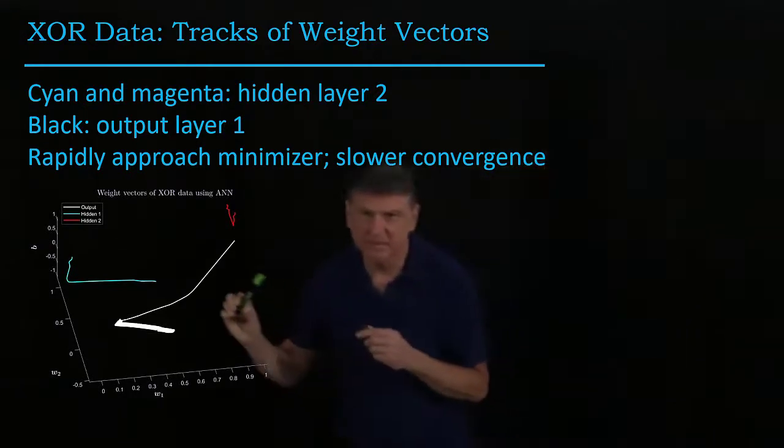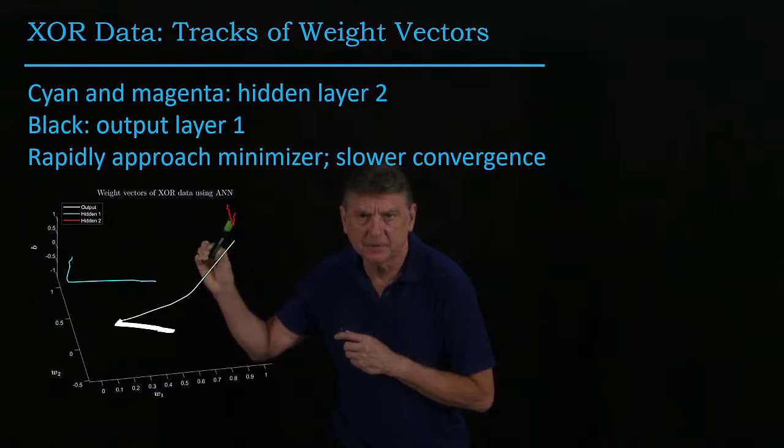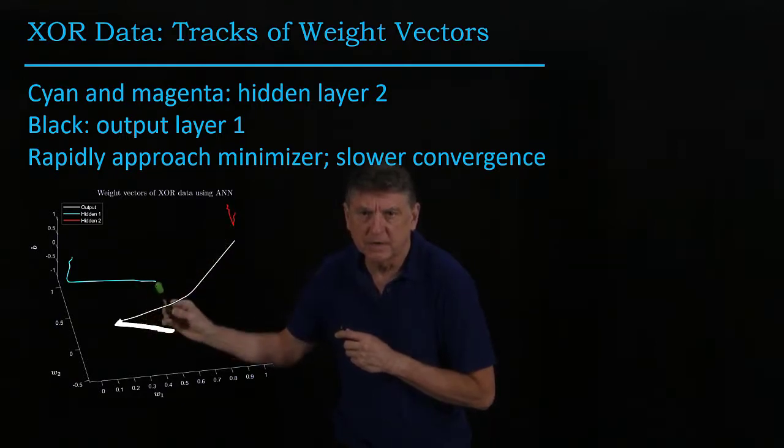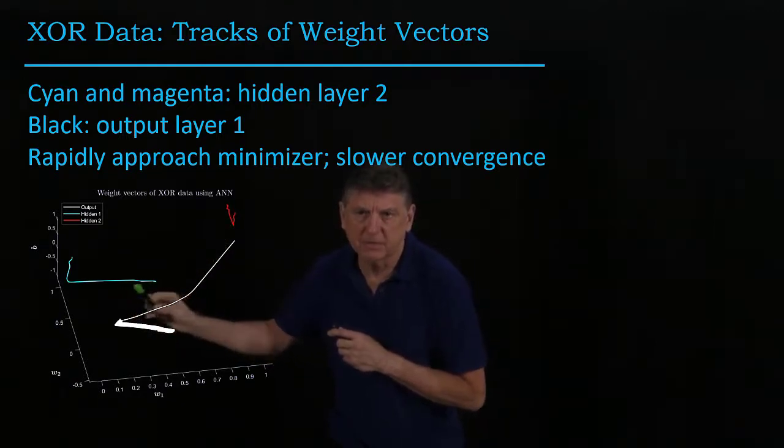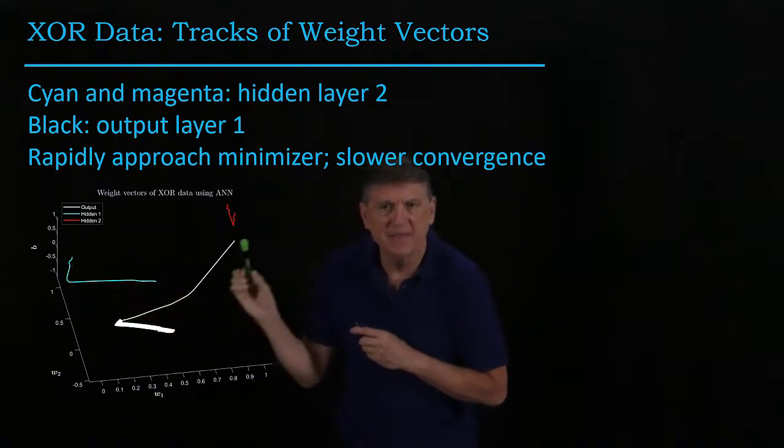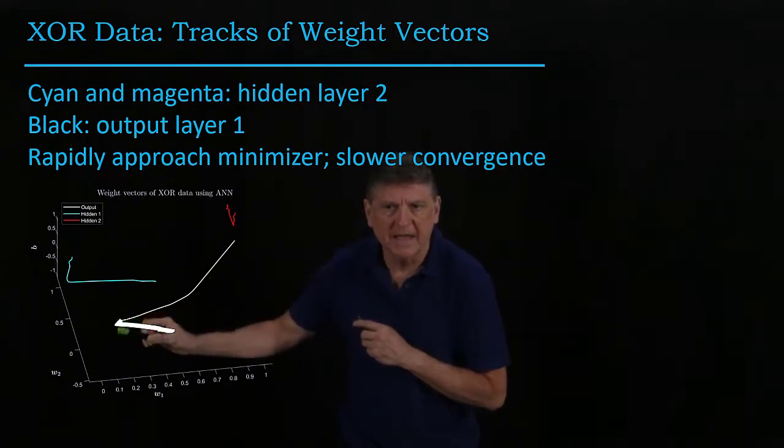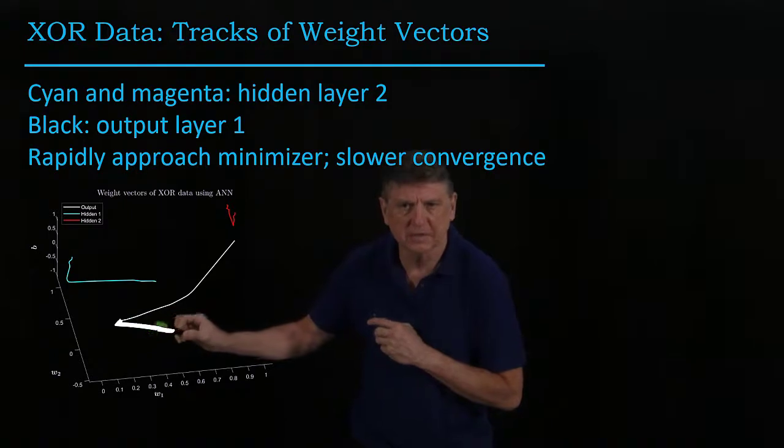So what's happening here is that for one of the hidden neurons, it fairly rapidly converges. For another one, it rapidly gets close and then gradually converges, and then for the output layer, what happens is it goes along quite rapidly, and then it oscillates.